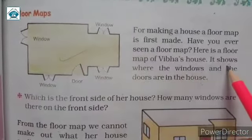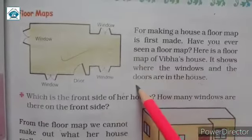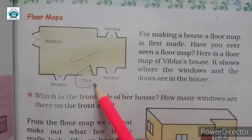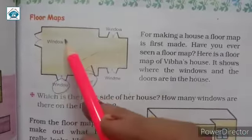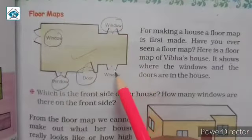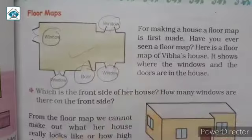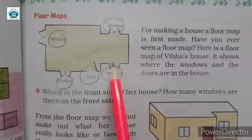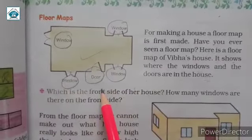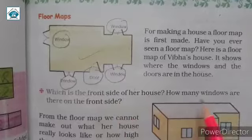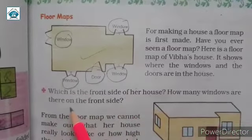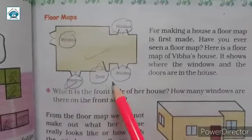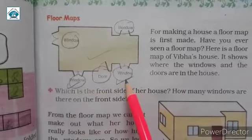And it shows where the windows and the doors are in the house. So we can see this is the door and these all are windows on the different places. Now which is the front side of her house? So this is the front side of her house. How many windows are there on the front side? So you can easily count one and two. So these are two windows.